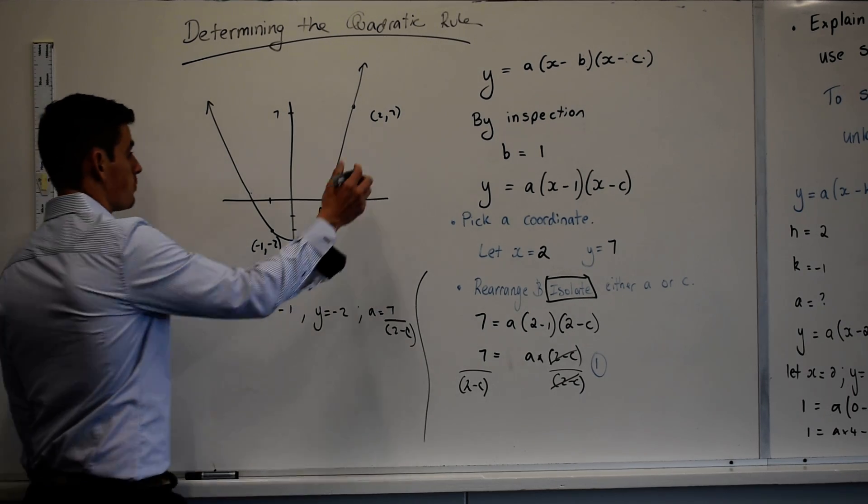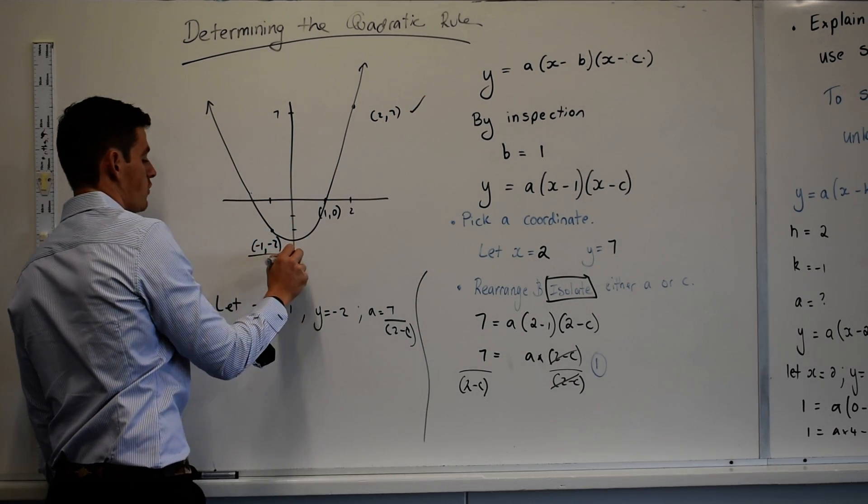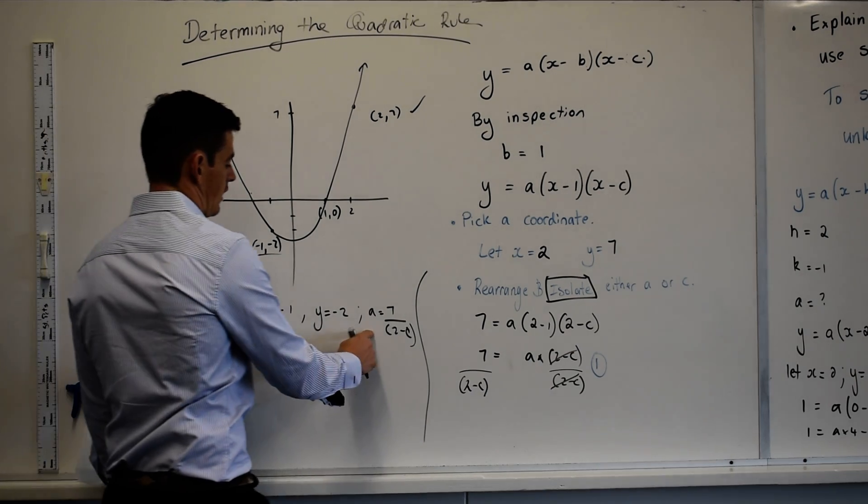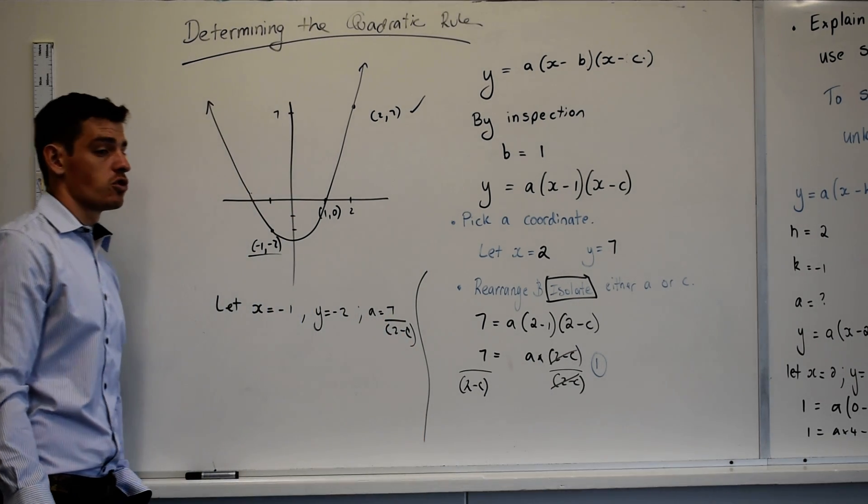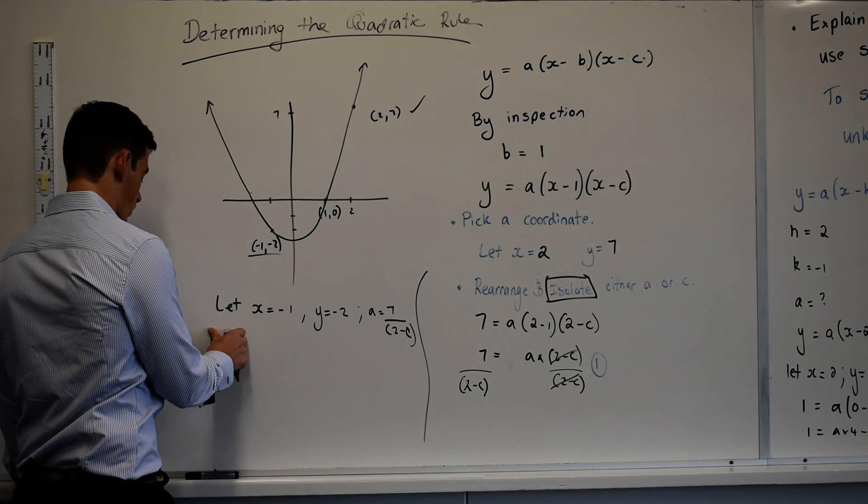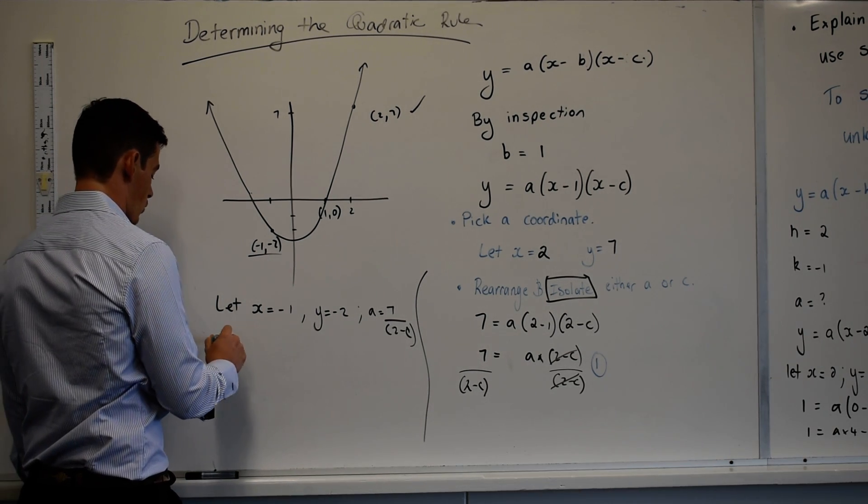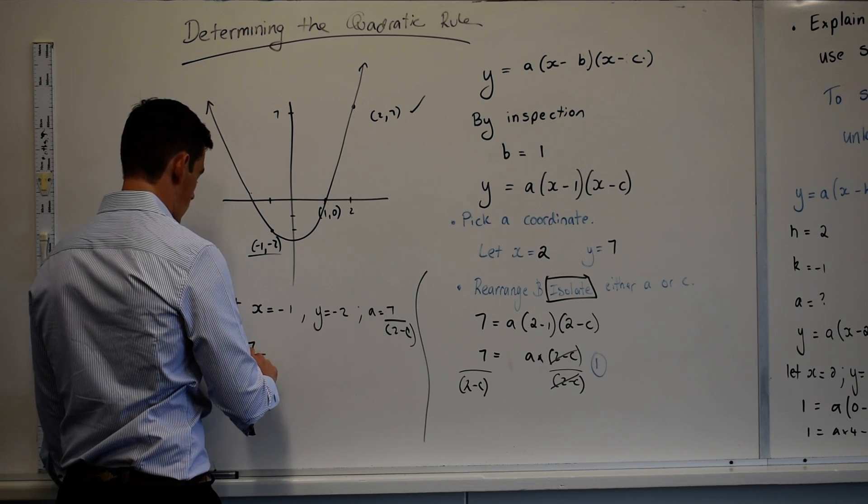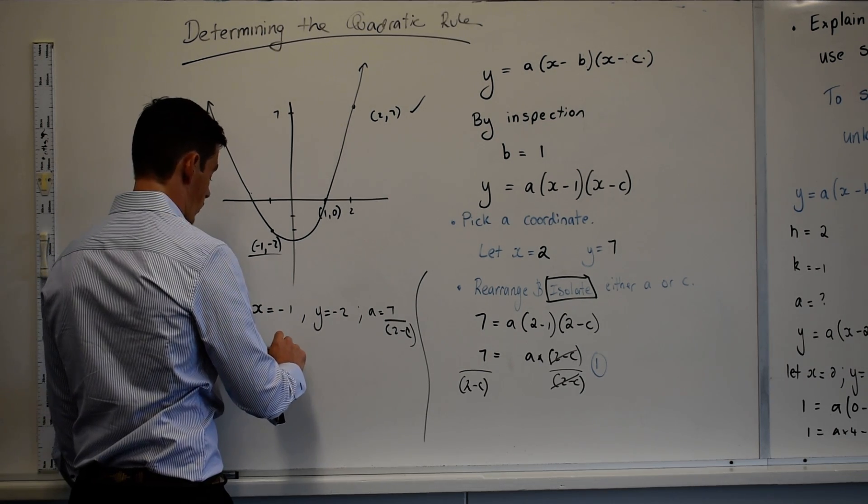I'm picking, so I've used this point I can't use that anymore, I have to now use this point and I also know that A equals 7 over 2 minus C. So now I write, sorry, not write, 2 equals 7 over 2 minus C times